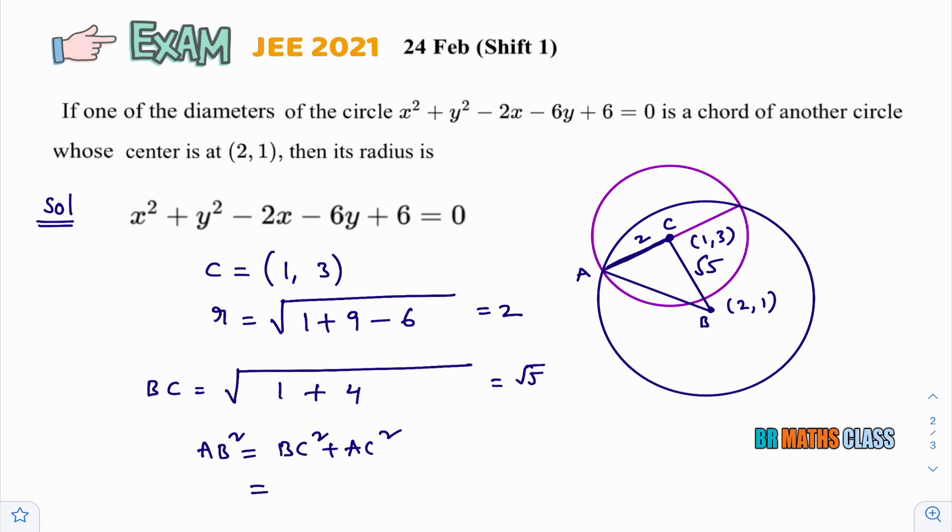So, BC square. BC is root 5, na? BC square is 5. Plus AC square is 2 square is 4. 5 plus 4 is 9. I got that AB square equal to 9. Therefore, AB equal to root 9. Root 9 is 3. So, you can observe AB, AB is the radius of second circle. It can be understood easily. So, for this problem, answer is 3.